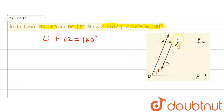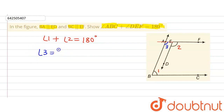We extend FE such that this whole line AF is parallel to BC. If AF is parallel to BC, and we call angle BAE as angle 3, then angle 2 and angle 3 are corresponding angles because ED is parallel to AB and AF is a transversal. So angle 3 is equal to angle 2, because corresponding angles are equal.